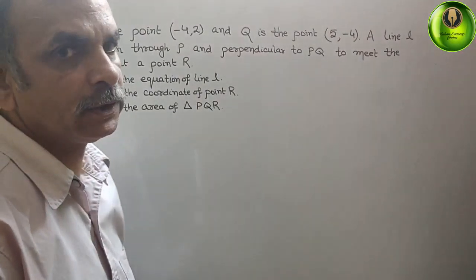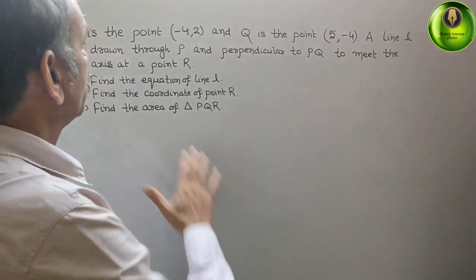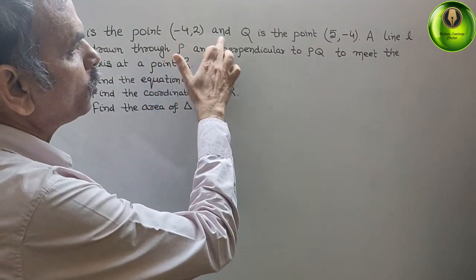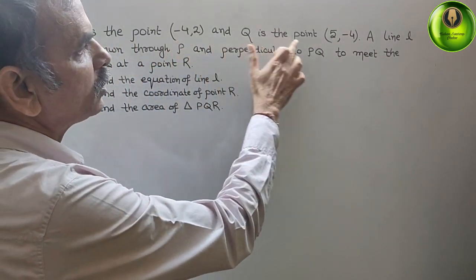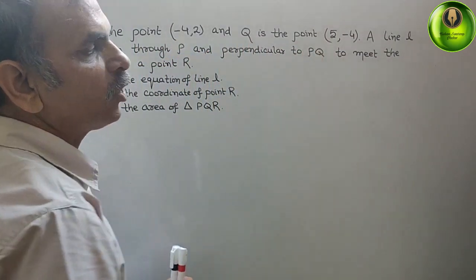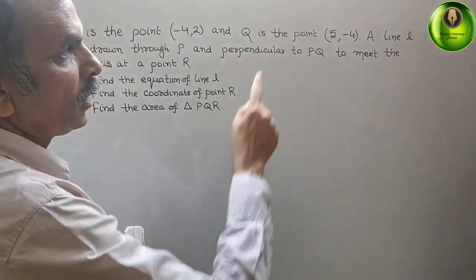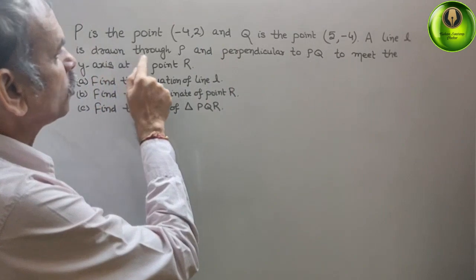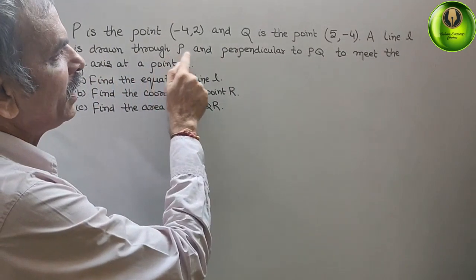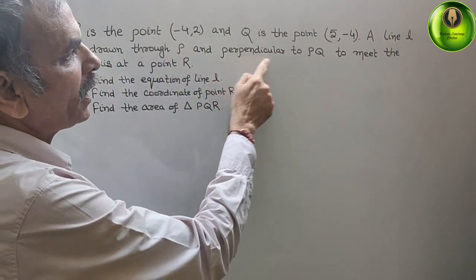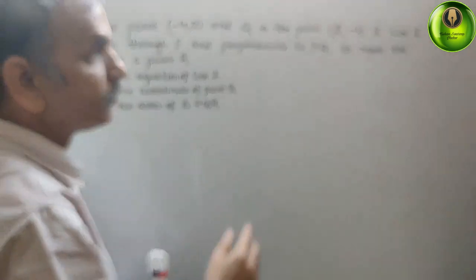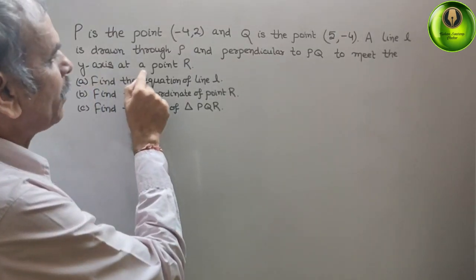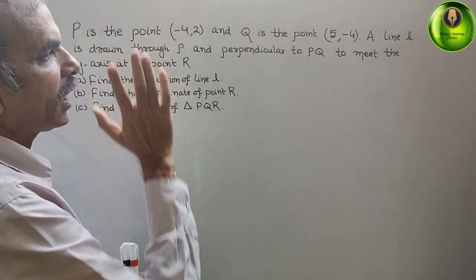Your question is: P is the point (-4, 2) and Q is the point (5, -4). A line L is drawn through P and perpendicular to PQ to meet the y-axis at a point R.